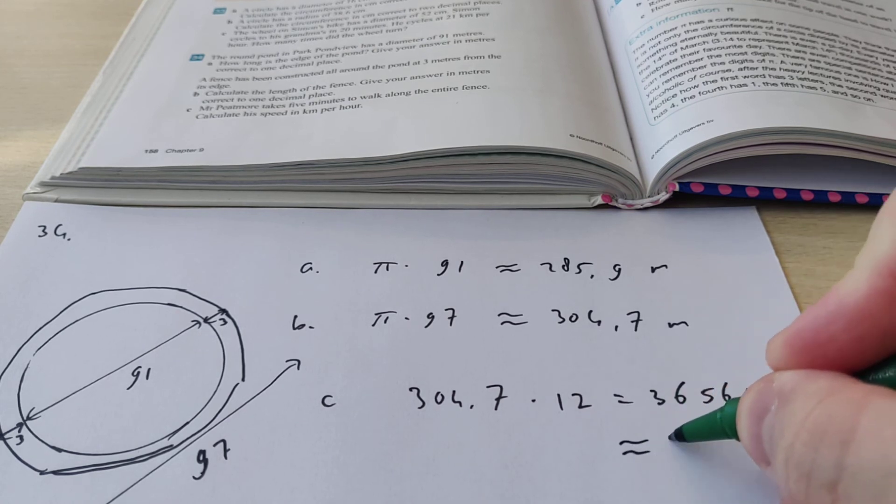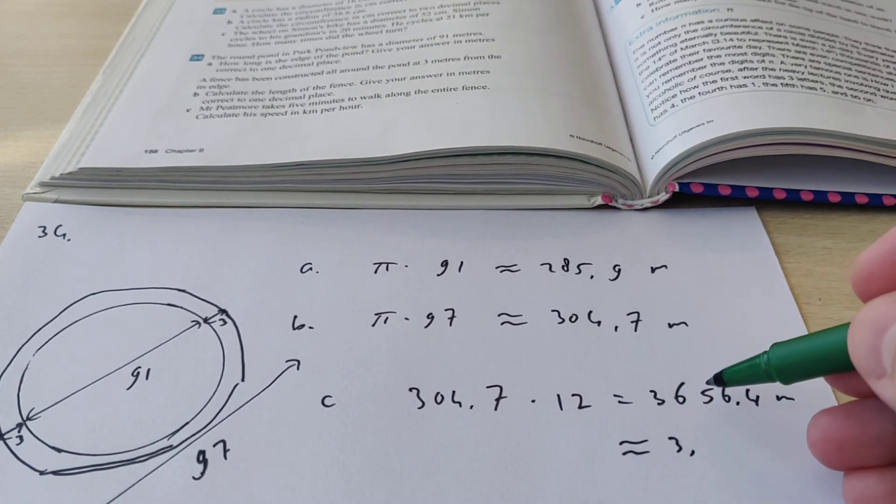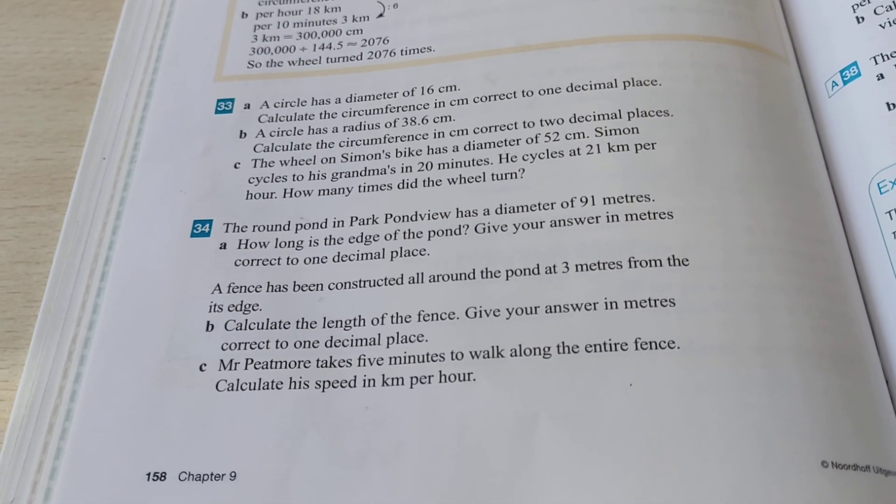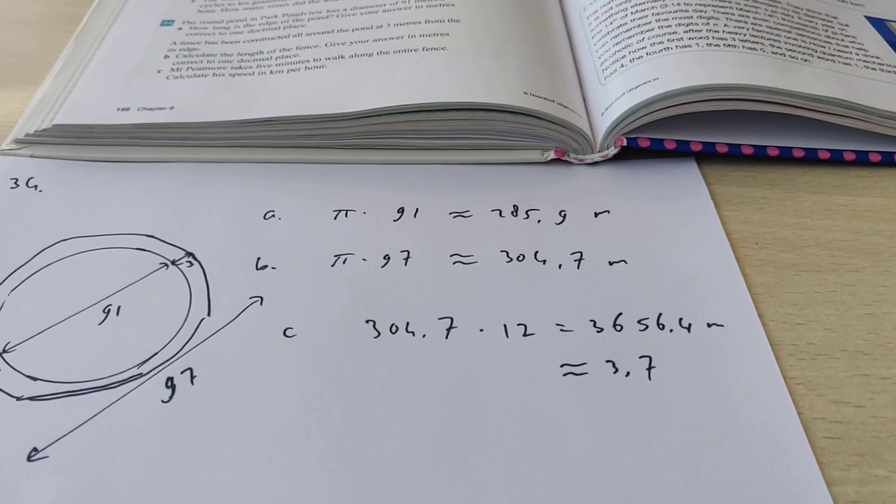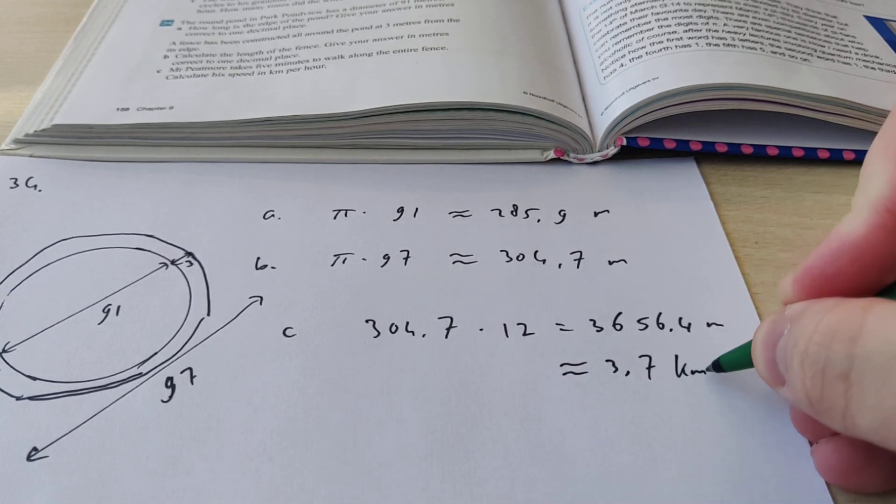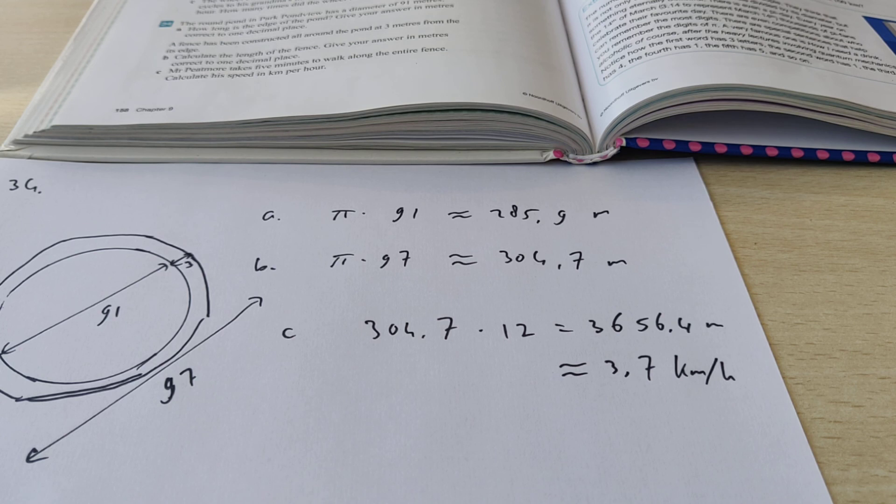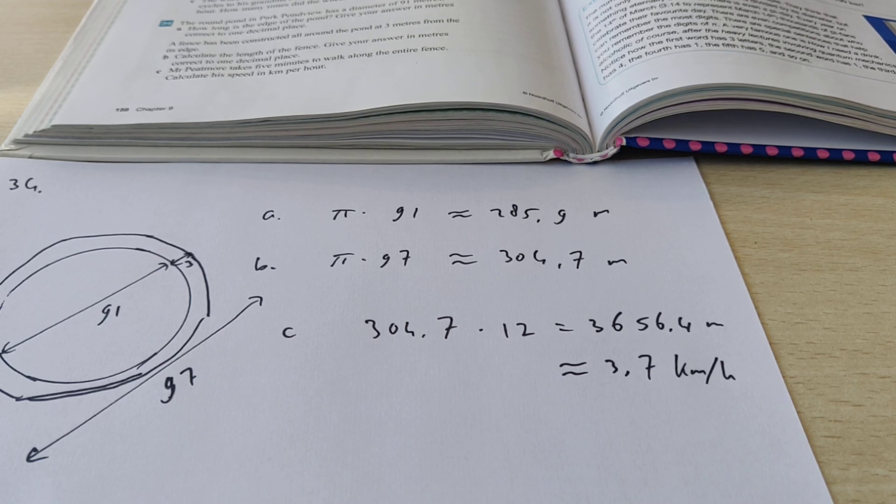If you round this off, you get 3.7 kilometers to one decimal place. The question doesn't say how many decimal places to use, but I'm going to use one decimal place. So 3.7 kilometers per hour is the speed for Mr. Peatmore. These are the answers for exercise 34. Thank you for watching.